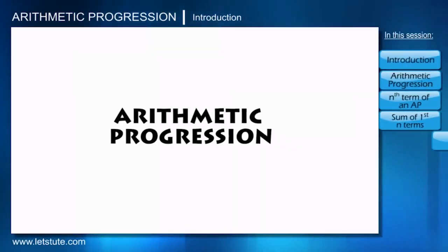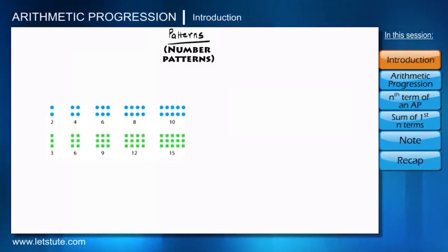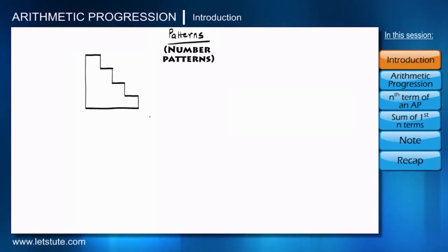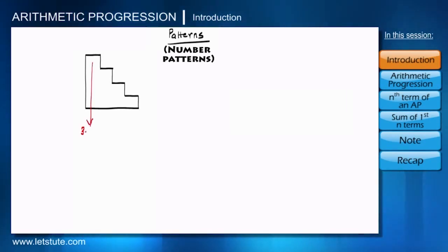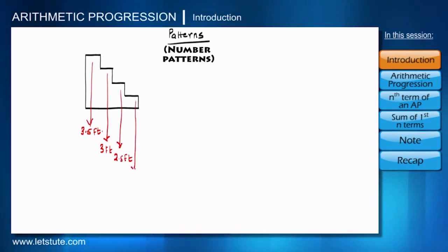Hi friends, in this session we are going to discuss about some interesting patterns. There are many things around us which follow some specific patterns. For example, in this staircase, the height of the first step from the left-hand side is 3.5 feet, the second step is 3 feet, the third step is 2.5 feet, and the last step is 2 feet.